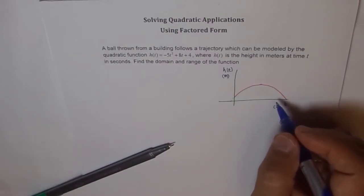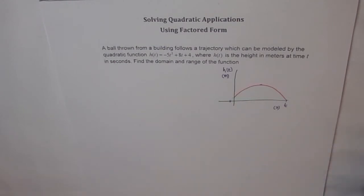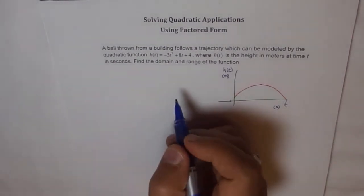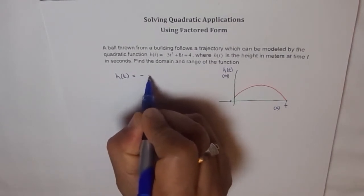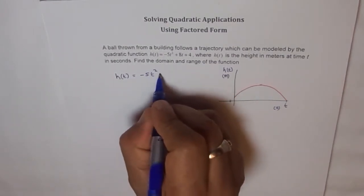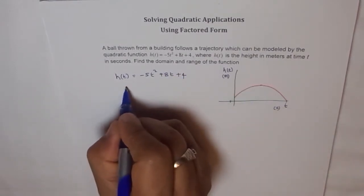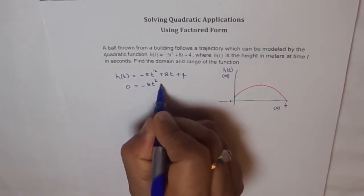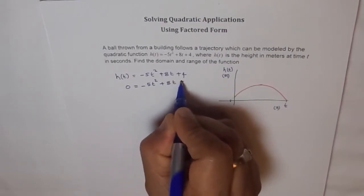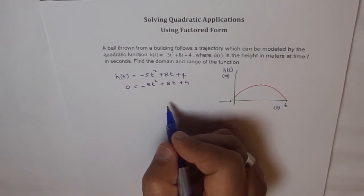We need to solve for height equals 0, so that we get this point as well as this point. That is the approach to this problem. We have the function h(t) equals minus 5t squared plus 8t plus 4. We will equate h(t) as 0, so 0 equals minus 5t squared plus 8t plus 4. Now we need to factor this out.